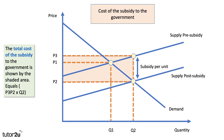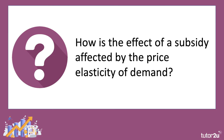Now, what about the cost to the government? The government of course is paying for the subsidy, and it will pay the subsidy per unit multiplied by the quantity bought and sold. So the subsidy cost is equal to P3 minus P2 multiplied by output Q2 — that's the orange shaded area on the diagram.